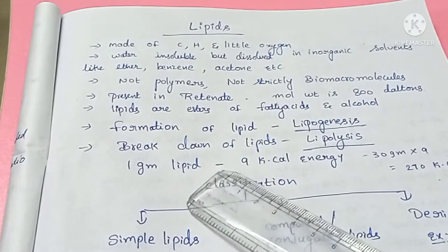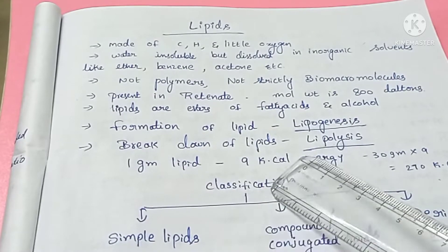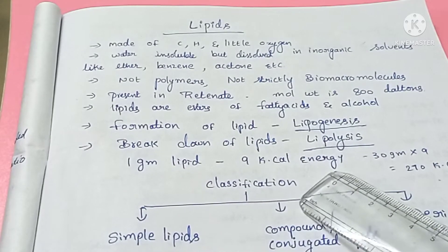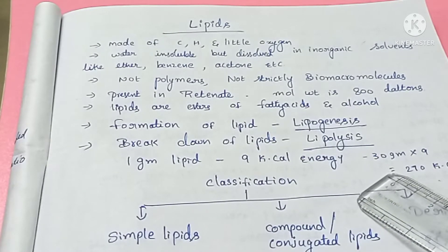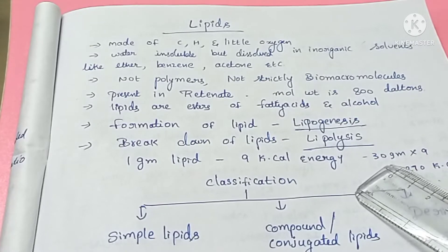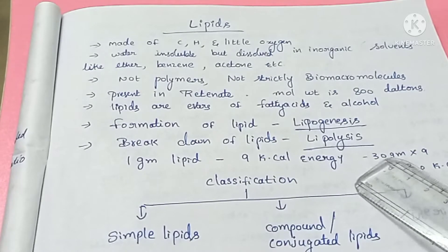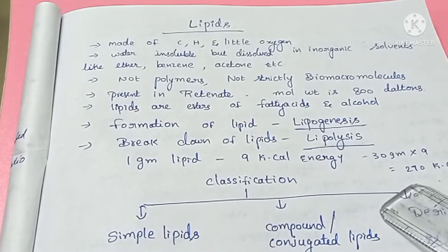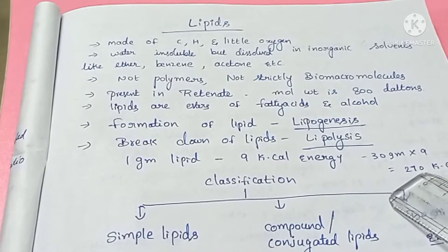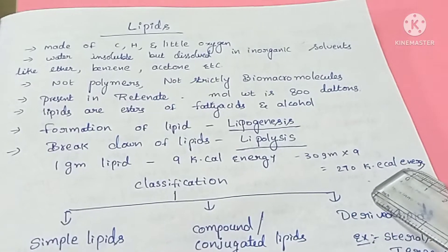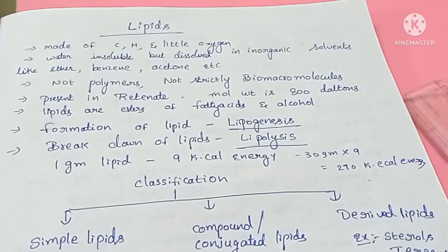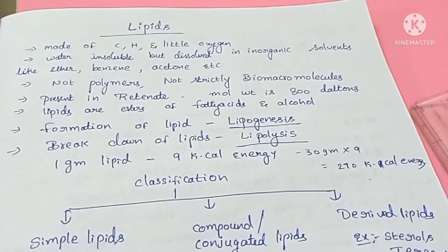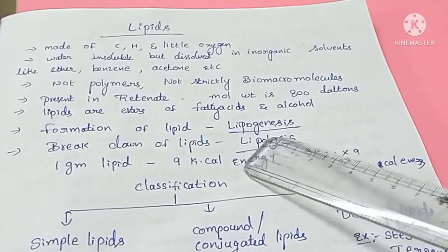One gram of lipids produces 9 kilocalories of energy. For example, 30 grams of fat — 30 multiplied by 9 — gives 270 kilocalories of energy produced.